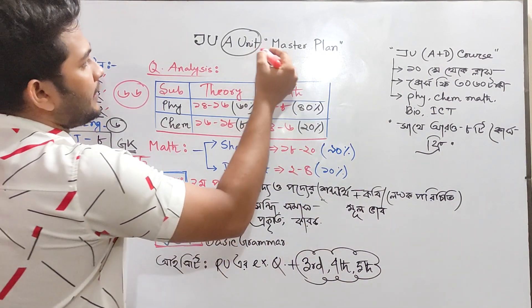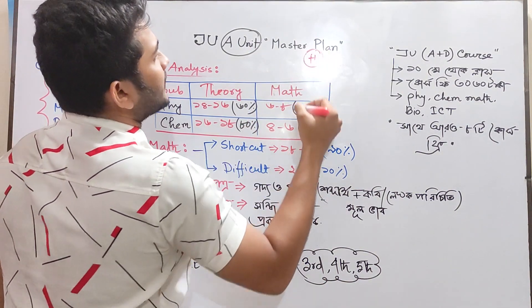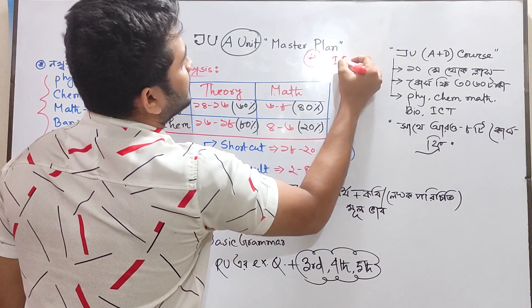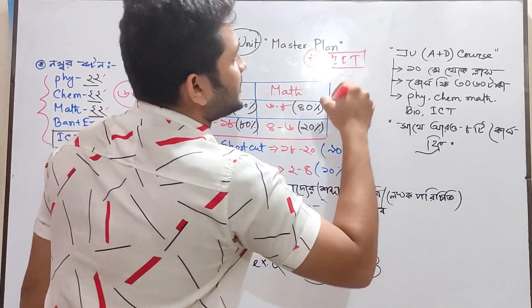If you have a unit, you can get 100 chance. This is the IIT unit. This is the information technology event.